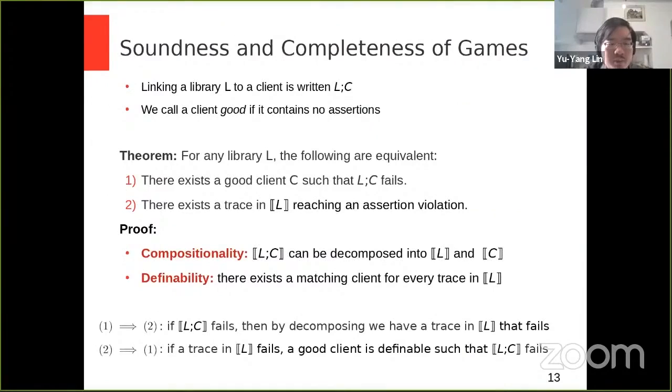Taking all of these moves on the arrows, so all of the labels on the arrows, we can build a trace that is causing our error. By definability of our games, which we shall prove, we can build a client from this trace, which is seen here in green. So all of the moves taken in the trace can be used to directly build this context for the library.